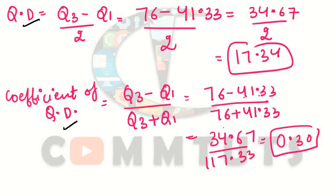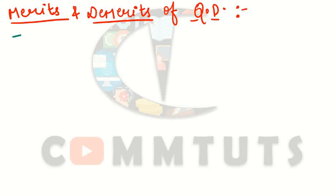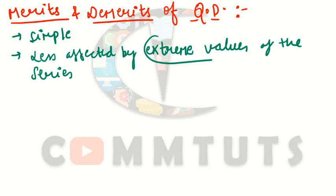Now, the merits and demerits of quartile deviation. The first merit is that it is very easy to understand — the calculation is simple. The second merit is that quartile deviation is less affected by extreme values of the series, meaning the smallest and largest values in the data do not significantly affect the result.